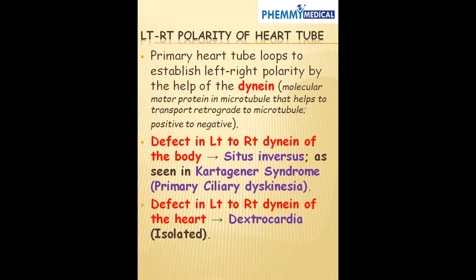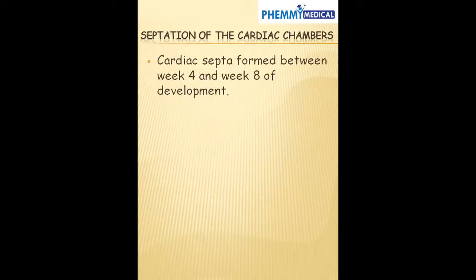If there's a defect in the left to right dynein of just only the heart, that can lead to a condition that we call dextrocardia. In those patients, the point of maximal impulse or their apical impulse, instead of being on the left, is going to be on the right.